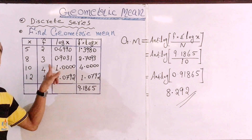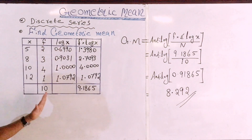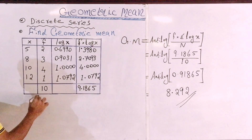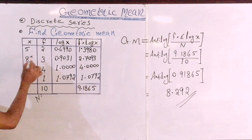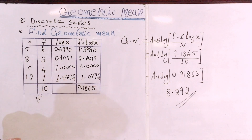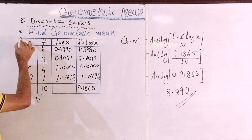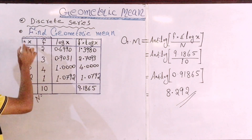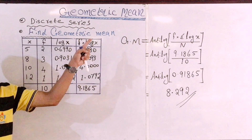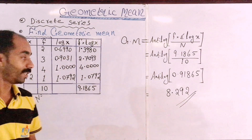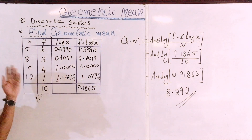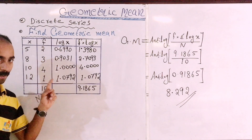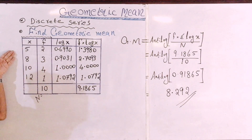The values go up to 8 and 10 at the end. If the total number is 10, then capital N is equal to 10. The problem has two columns: X and F.